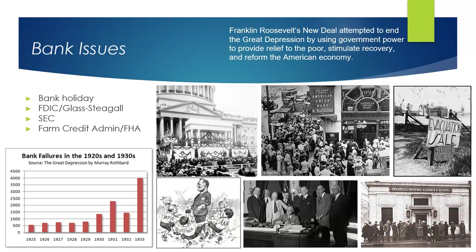In his inaugural address in March 1933, Franklin Roosevelt promised the American people that he would wage war against the Depression. He attempted to end the Great Depression by using government power to provide relief to the poor, stimulate recovery, and reform the American economy. Those three R's became the basis for his legislative program. This wasn't a linear plan, but it just represents categories of his plan. His first hundred days in office resulted in numerous pieces of legislation, many of which focused on recovery of the economy and encouraging the people to have faith in their financial system.